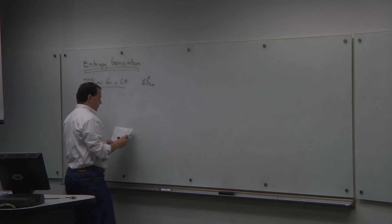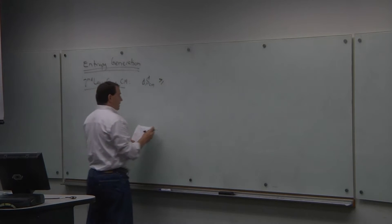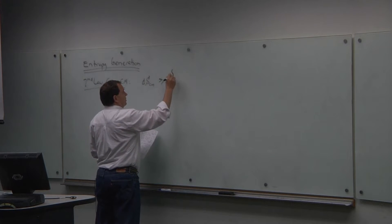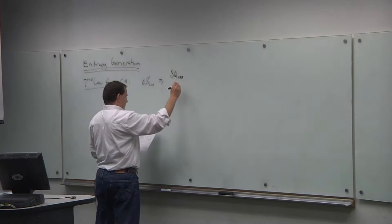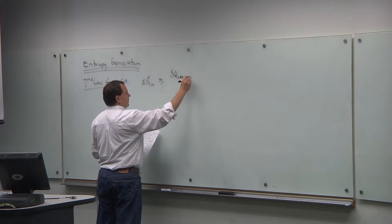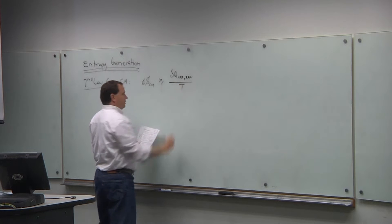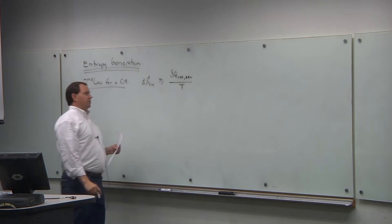The entropy of a control mass is greater than or equal to the net heat transfer — specifically, the net reversible heat transfer — over the temperature at which that heat transfer occurs.